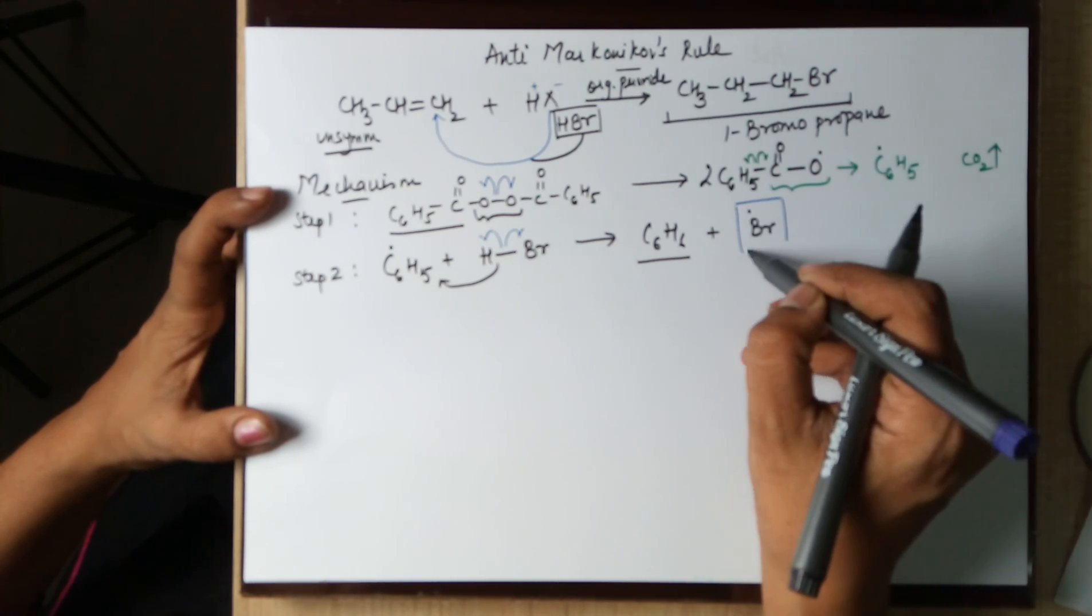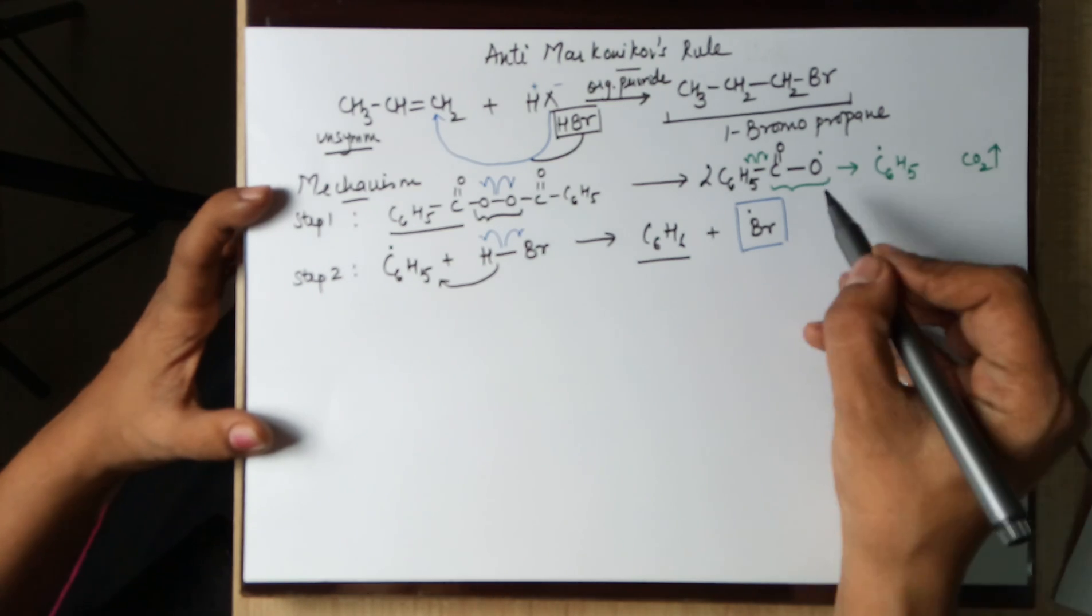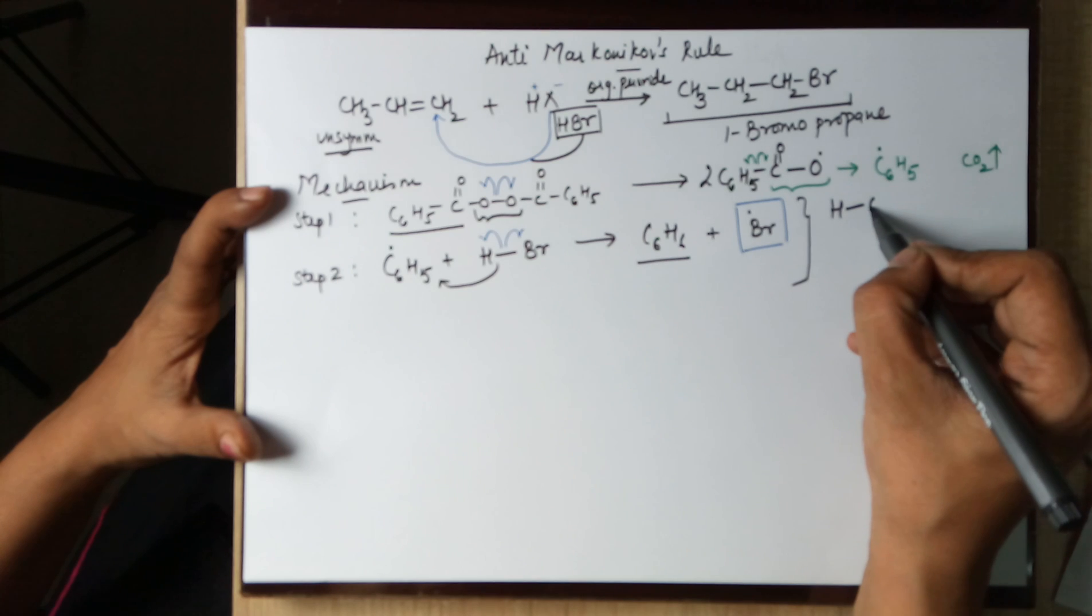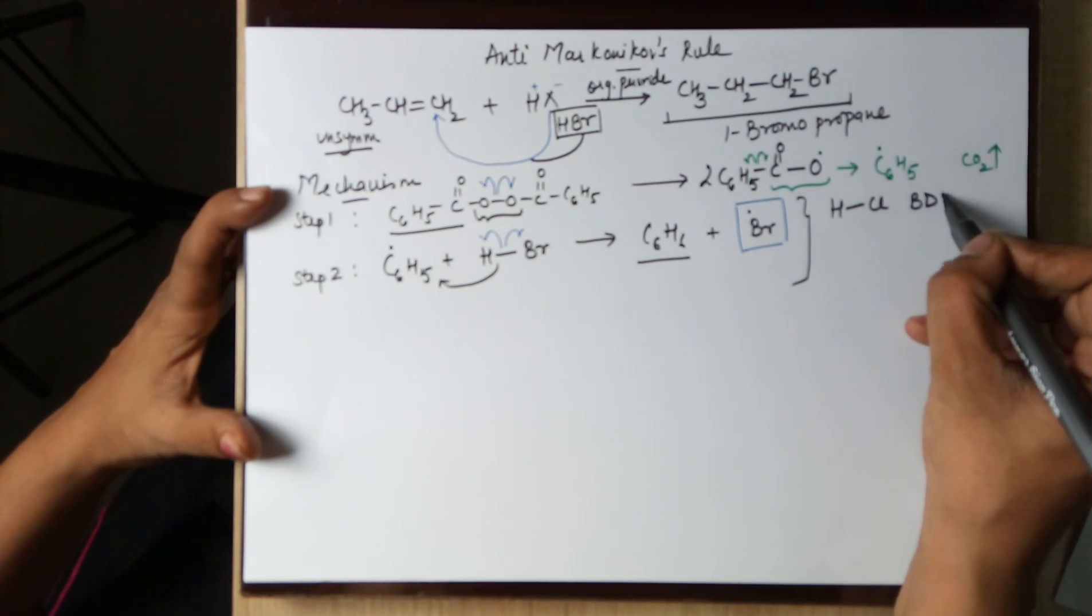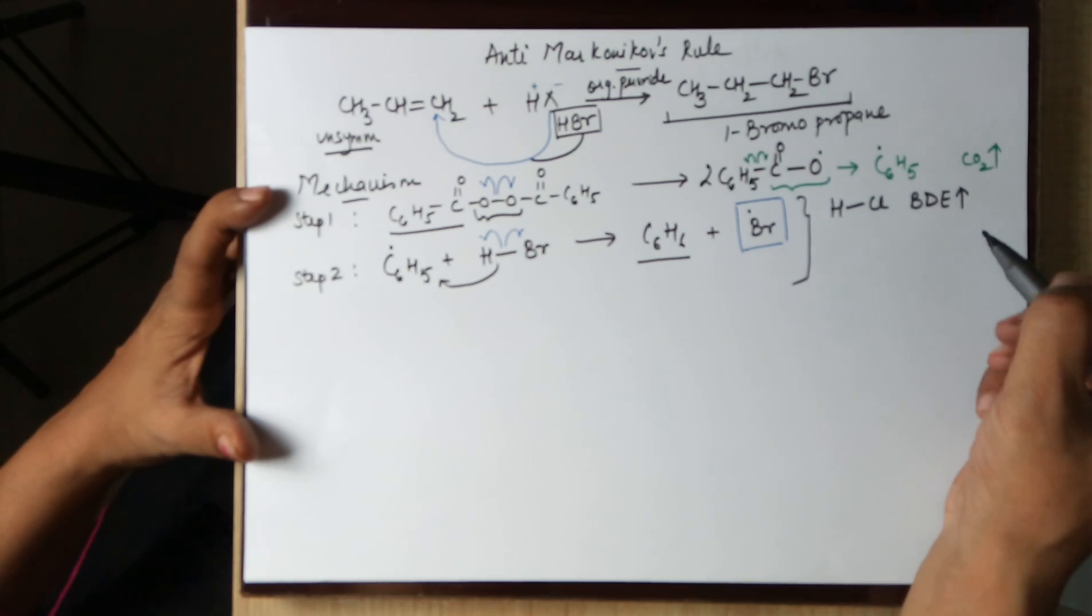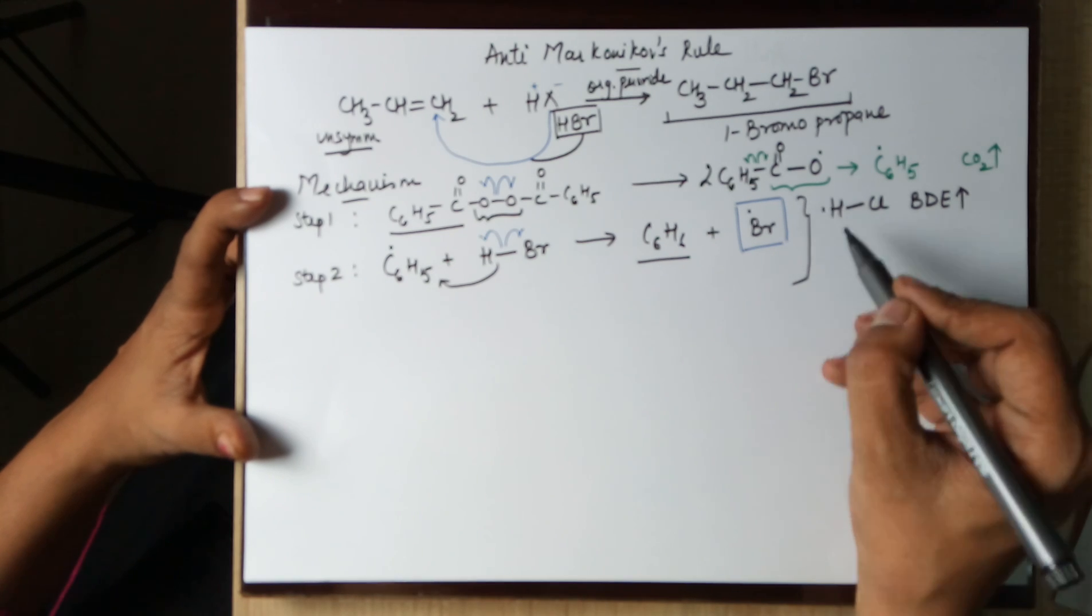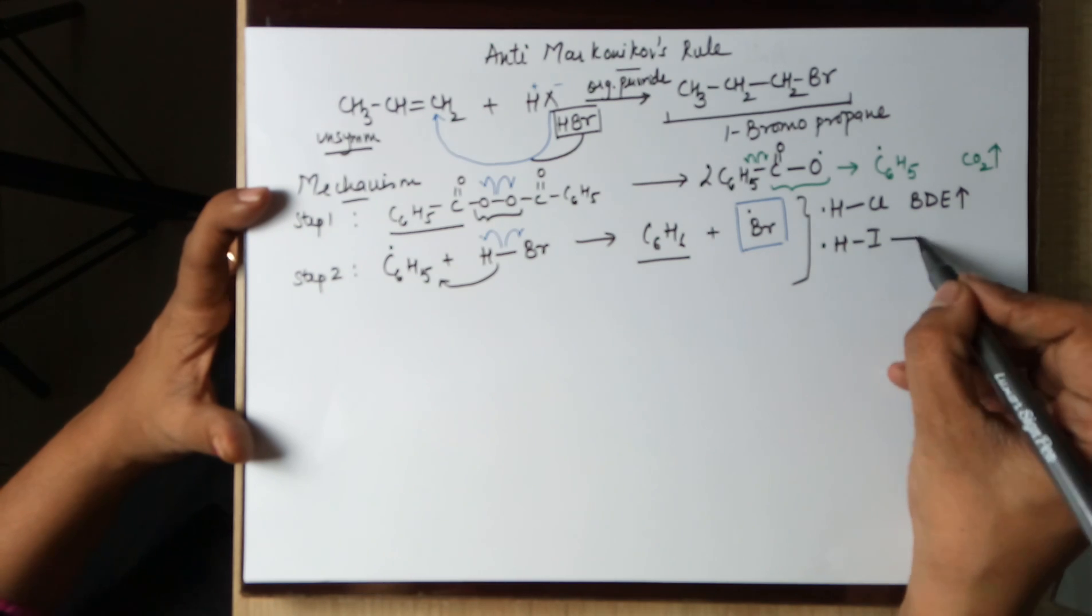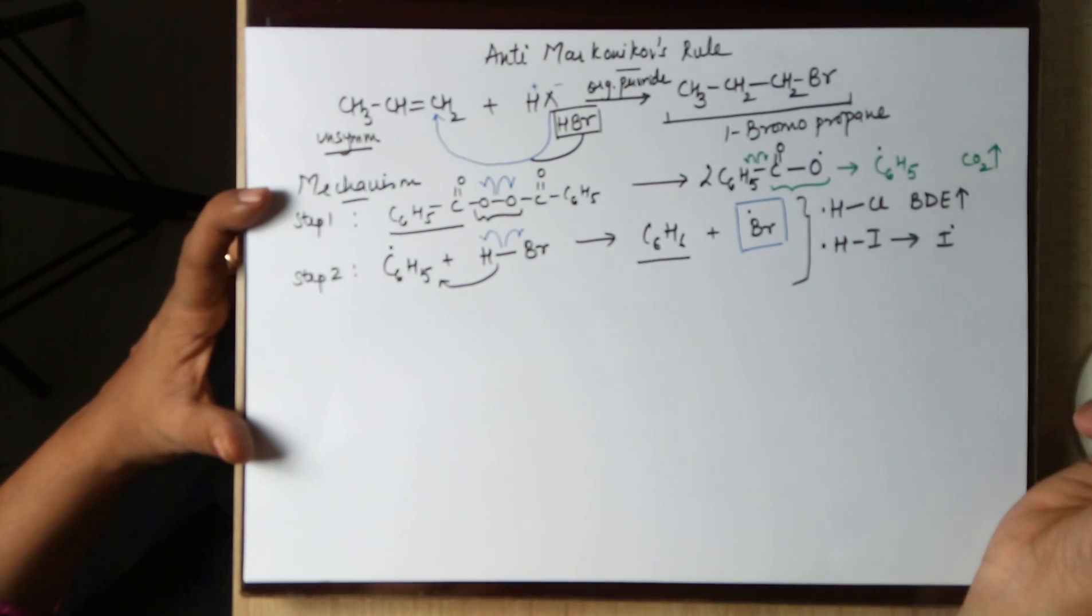Now this particular is not applicable to HCl because the bond dissociation energy is very high so this doesn't happen. Now what about HI then? The bond is very weak. Hence it does easily give you an I free radical.